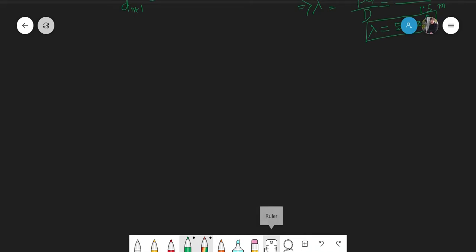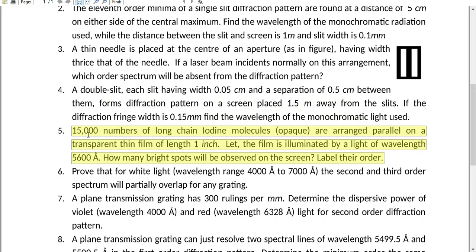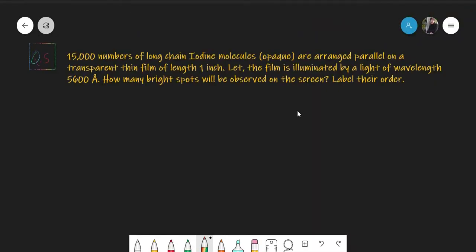For the next question, let us look at our tutorial sheet again. What we have here is 15,000 long chain iodine molecules which are opaque, arranged parallel on a transparent thin film of length one inch. The film is illuminated by light of wavelength 5600 Angstrom. How many bright spots will be observed on the screen? Let's take this to our slide — this is question number five.